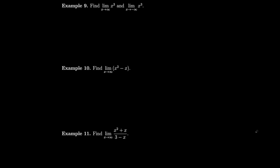Let's look at the limit of x³ as x goes to infinity and to minus infinity. Plugging in large numbers: 10³=1000, 100³=1,000,000, 1000³=1,000,000,000 — the bigger the input, the bigger the cube. So the limit of x³ as x→∞ is infinity. Similarly, large negative numbers cubed give even larger negative values, so the limit as x→-∞ is minus infinity.